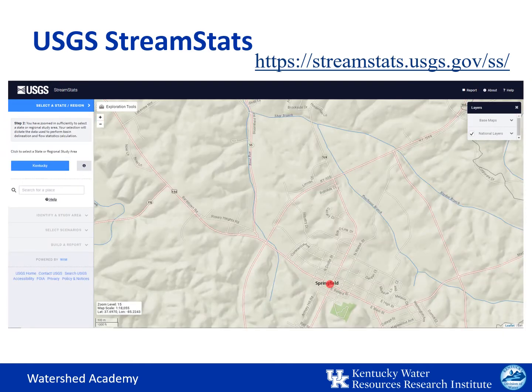Now our map has zoomed into Springfield and the software needs to confirm that we are selecting Kentucky as our state. After doing that, we can then see streamlines becoming big and blocky, which will help us click on the appropriate location. Let's confirm that we are looking for Springfield, Kentucky and change our base map to aerial, which will also help us navigate right to the mouth of our chosen stream.